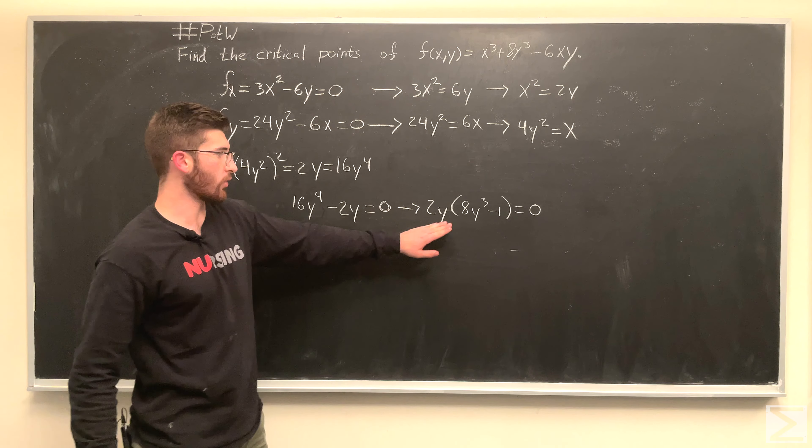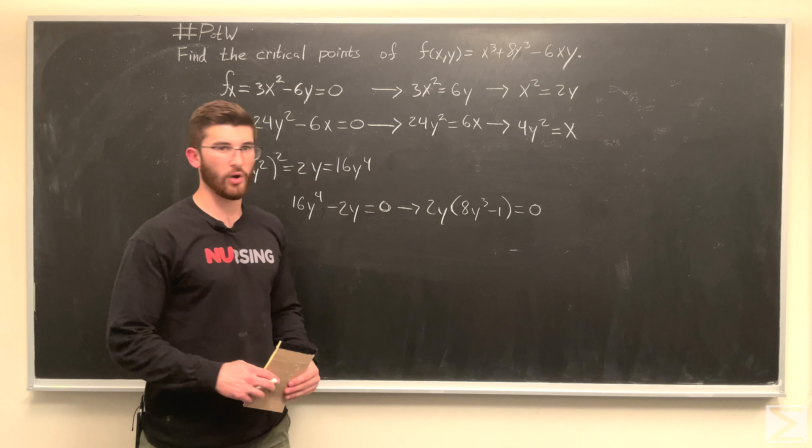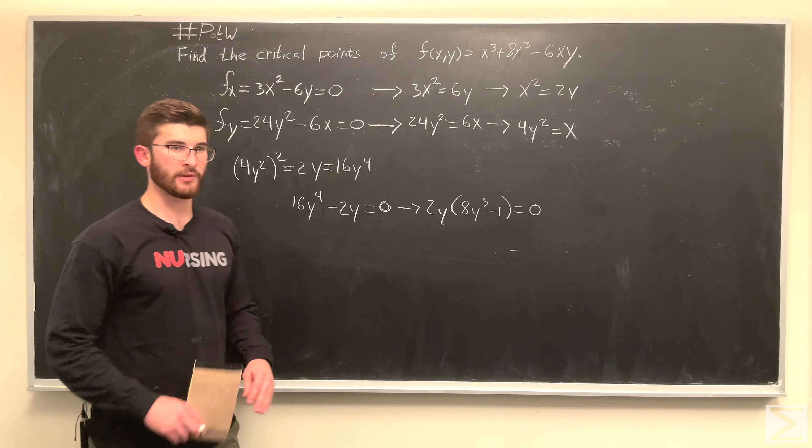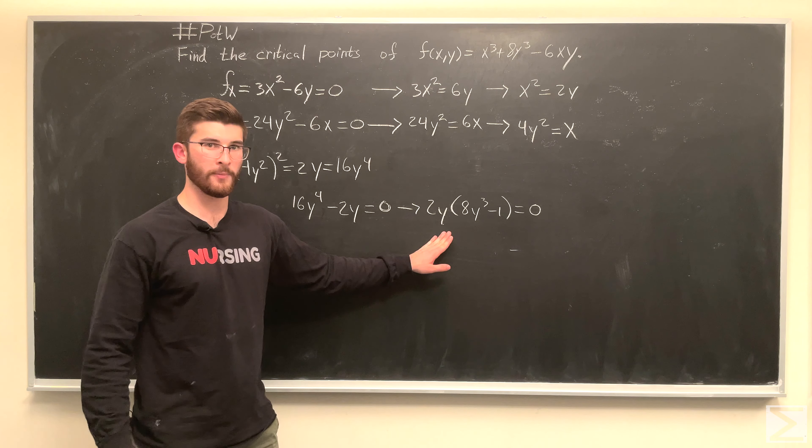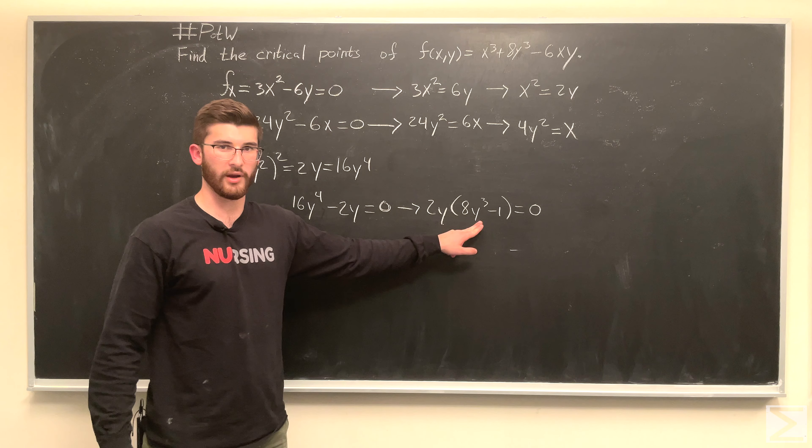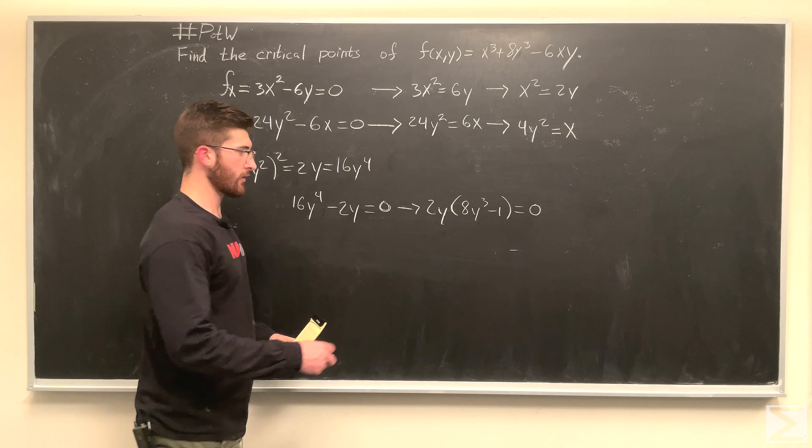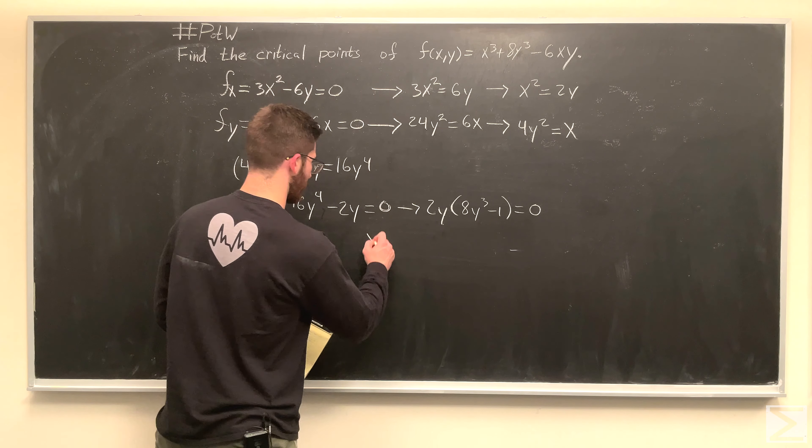So, finally, we get 2y times 8y cubed minus 1 equals 0. So, this is true if, first, if y equals 0, and second, if y equals 1 half. So, we have y equals 0, or y equals 1 half.